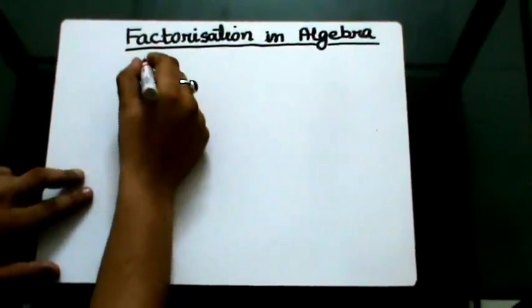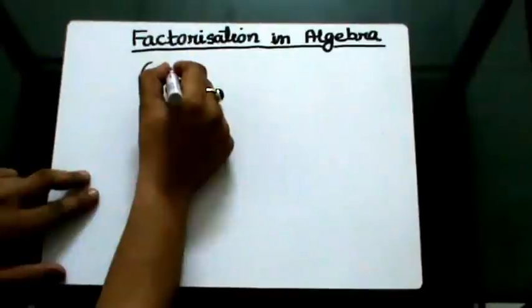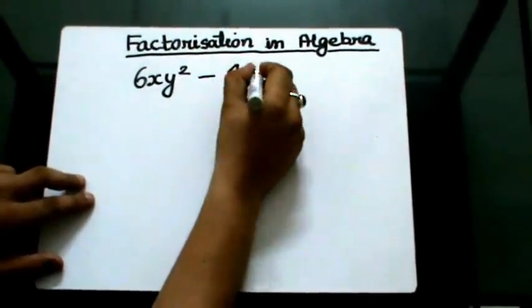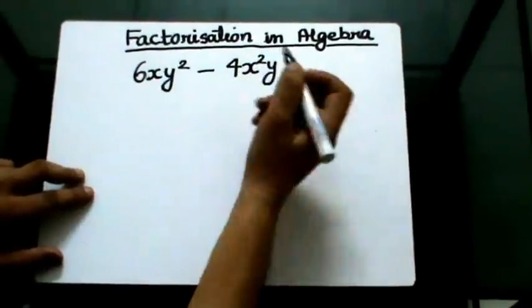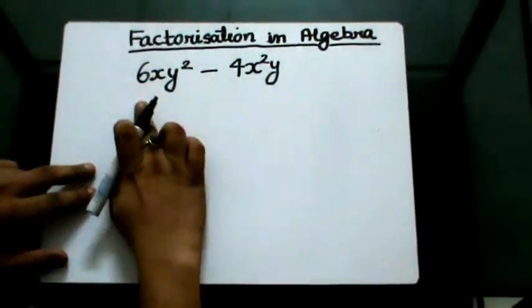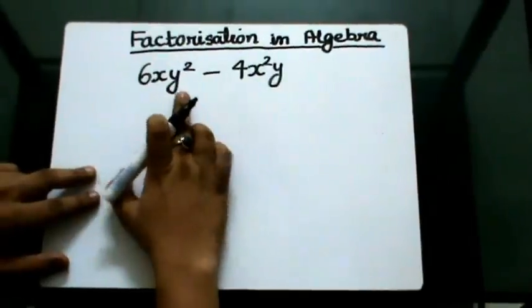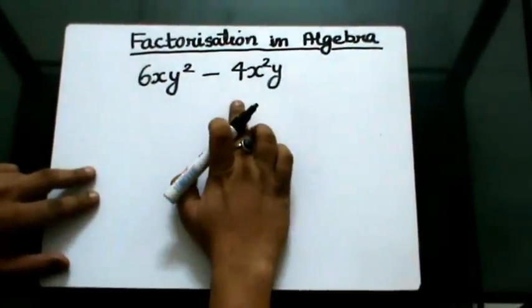Let's have 6xy² - 4x²y. Now in this expression, if you see, there are two terms: 6xy² and the second term is -4x²y.